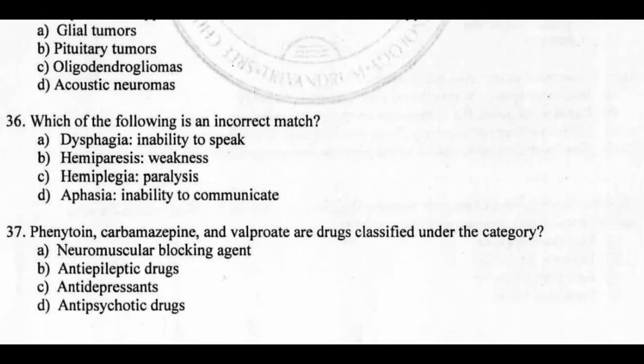Question 36: Which of the following is an incorrect match? Options: dysphagia — inability to speak; hemiparesis — weakness; hemiplegia — paralysis; aphasia — inability to speak. Right answer A: dysphagia is actually difficulty in swallowing, not inability to speak. That terminology is incorrect.